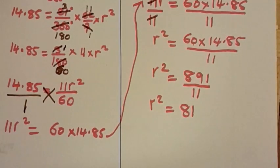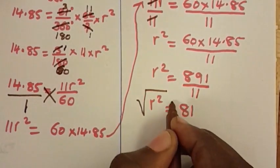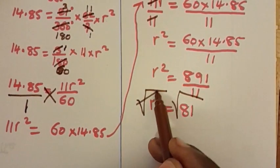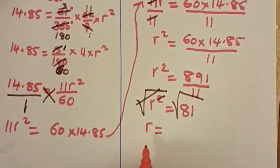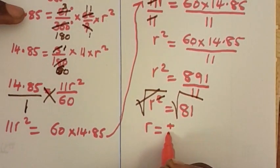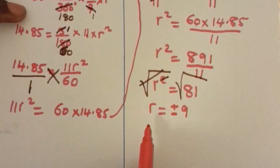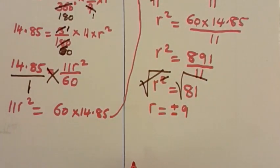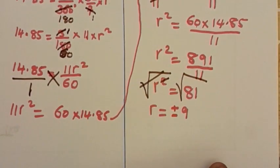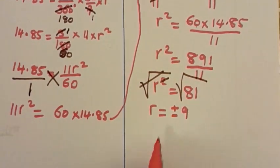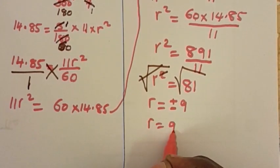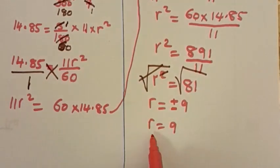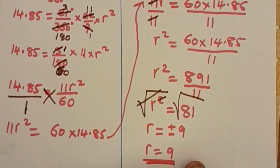We are being asked to find r, not r squared, so we take the square root of both sides. The square root of 81 gives plus or minus 9. But since radius is a length, there is no way we can have a negative length, so we pick the positive root. Therefore the radius is 9 centimeters.